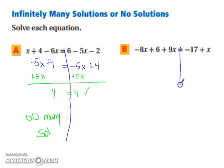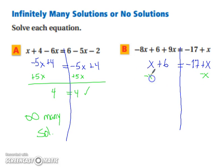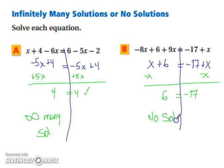For part b, we draw our line to separate the equation. On the left-hand side, negative 8x and positive 9x combine to leave x, and 6 stays by itself. On the right we have negative 17 plus x. We subtract x from both sides, and we're left with 6 equals negative 17. Since 6 does not equal negative 17, there are no solutions. And that concludes our lesson on solving equations with variables on both sides.